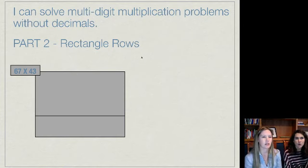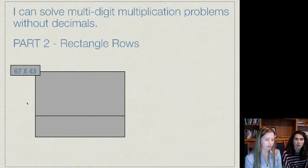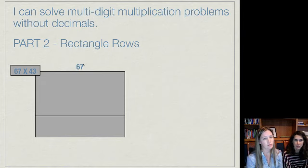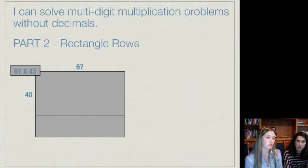You'll notice that we have rectangles again but now it's only broken up into two smaller ones rather than four as in before. The reason why is because you are going to keep one of the numbers together. You're not going to expand it. So this is just 67 now. And then the second number we are still going to expand. So you are going to have your 40 here and then you're going to have your 3 here.